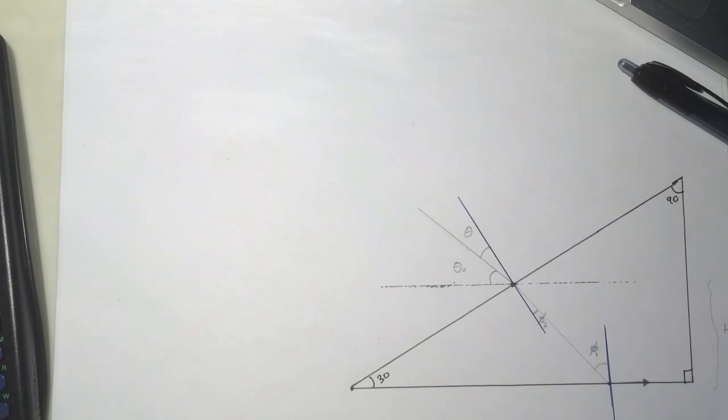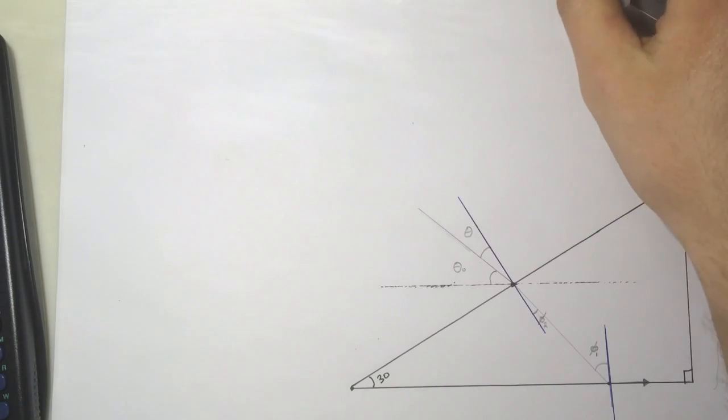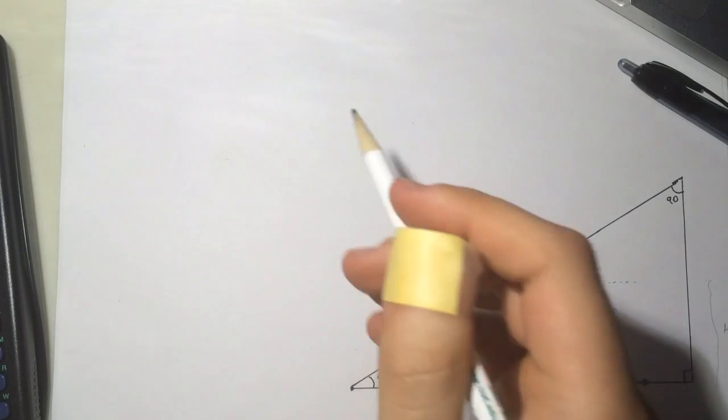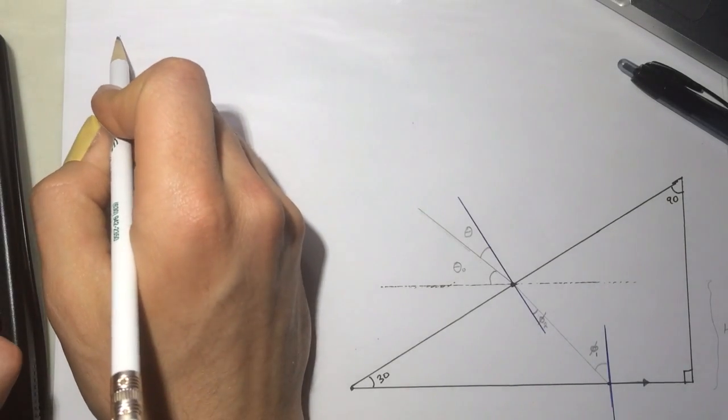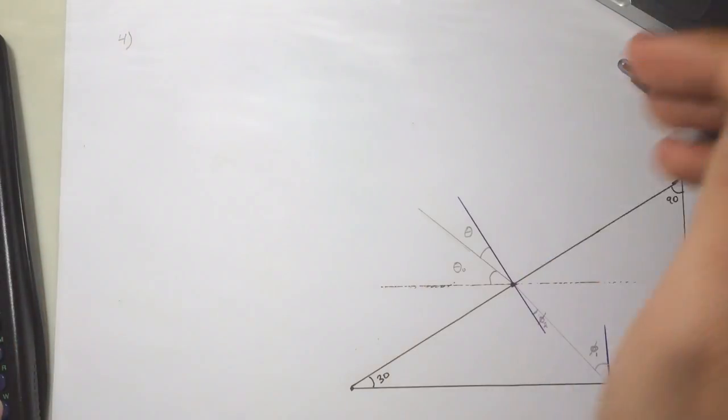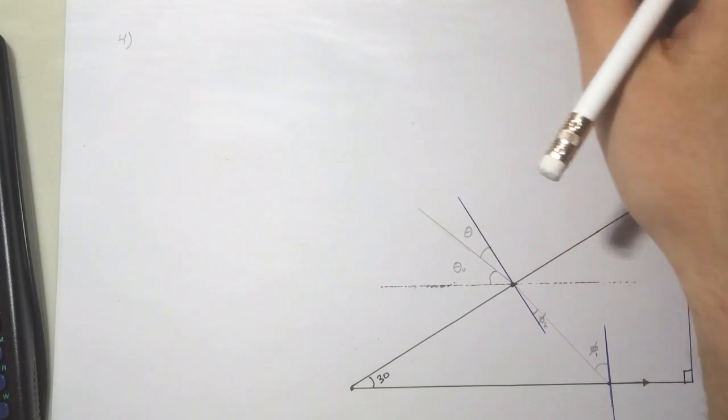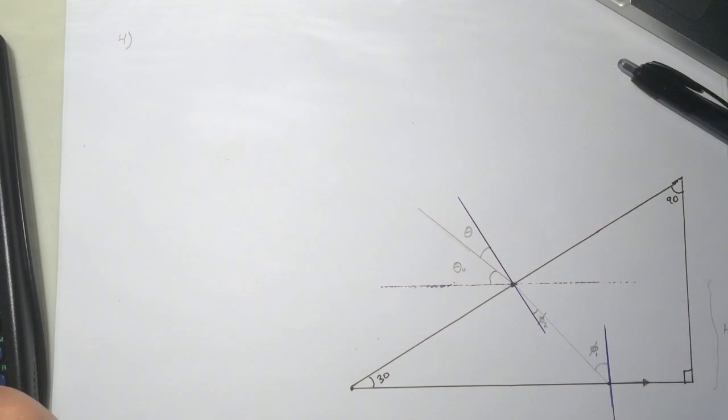Hi guys, this is part 2 for the problem, the monochromatic light and the 30-60-90 prism. We were left at problem number 4, and it was asking what is the theta 1 max.